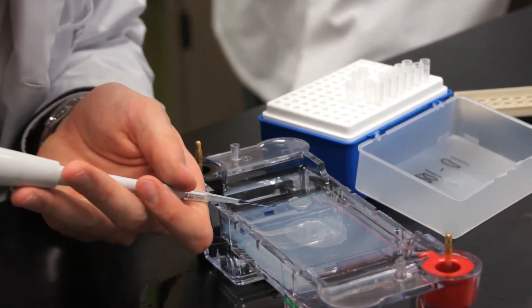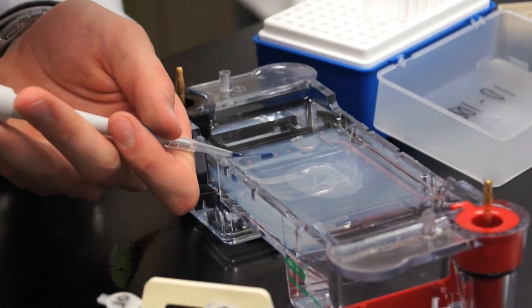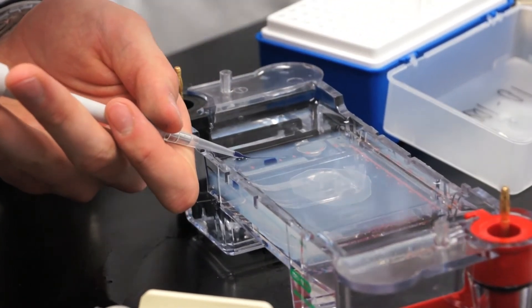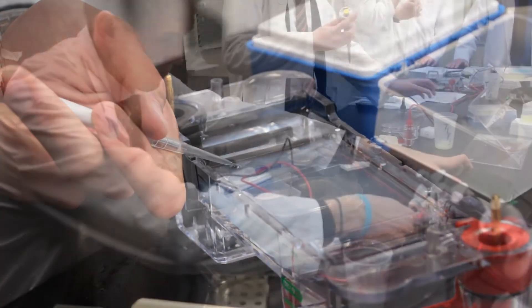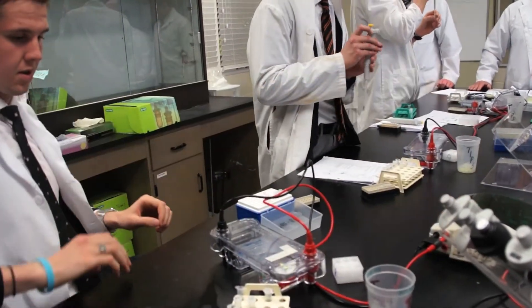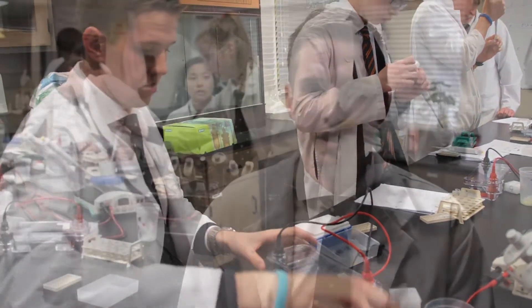And then in order to get to that specific gene that we wanted we used primers and basically what they do is they attach to the beginning and to the end of that specific gene in order to tell the enzyme that is then going to replicate the gene where to start and where to end.